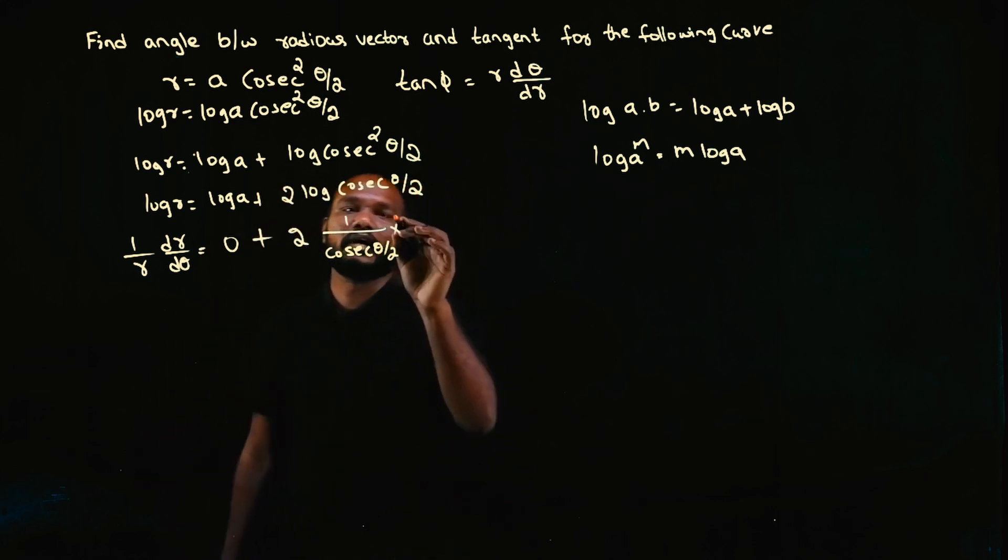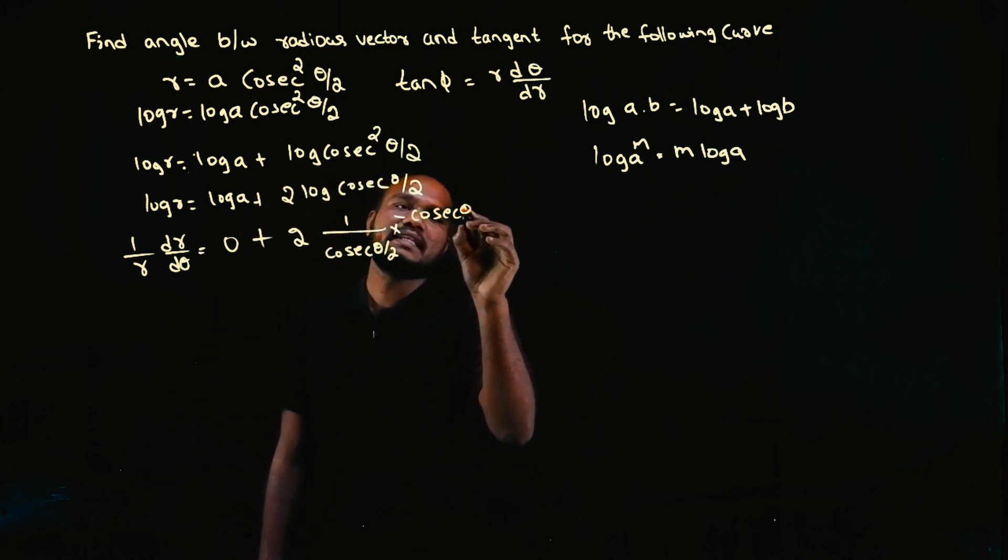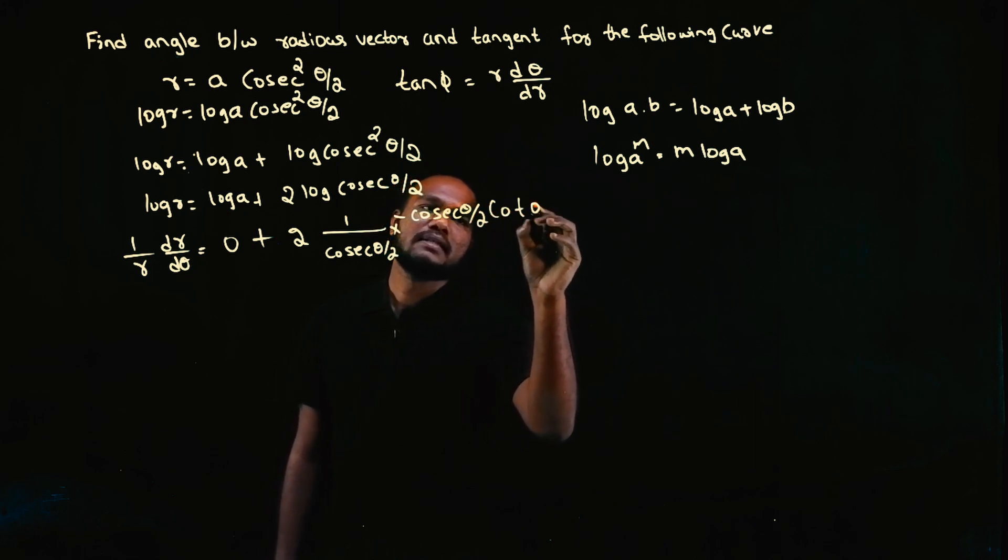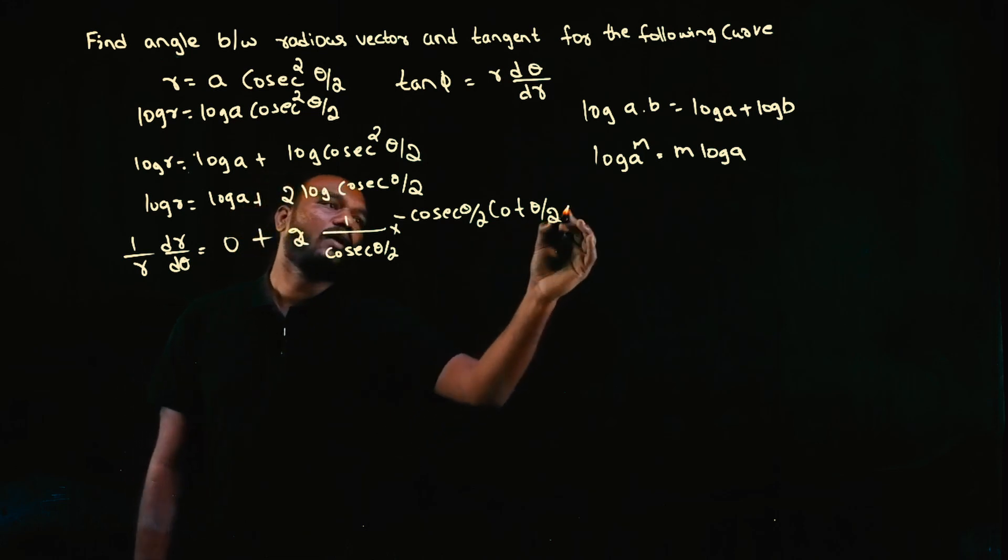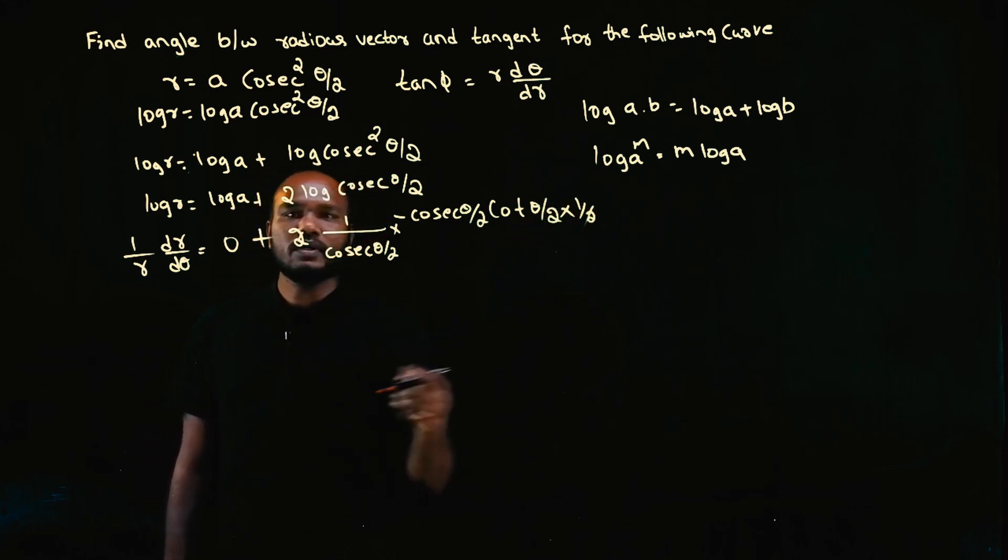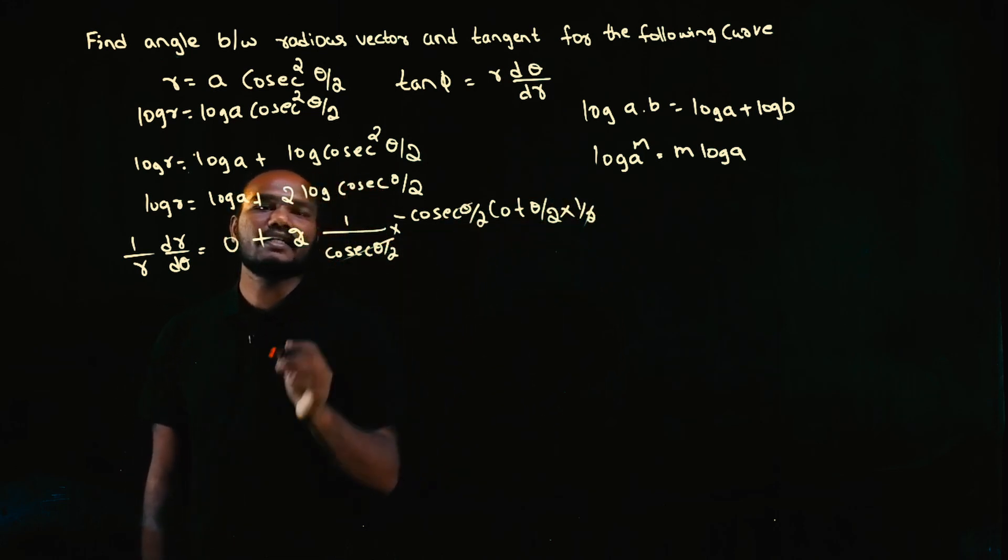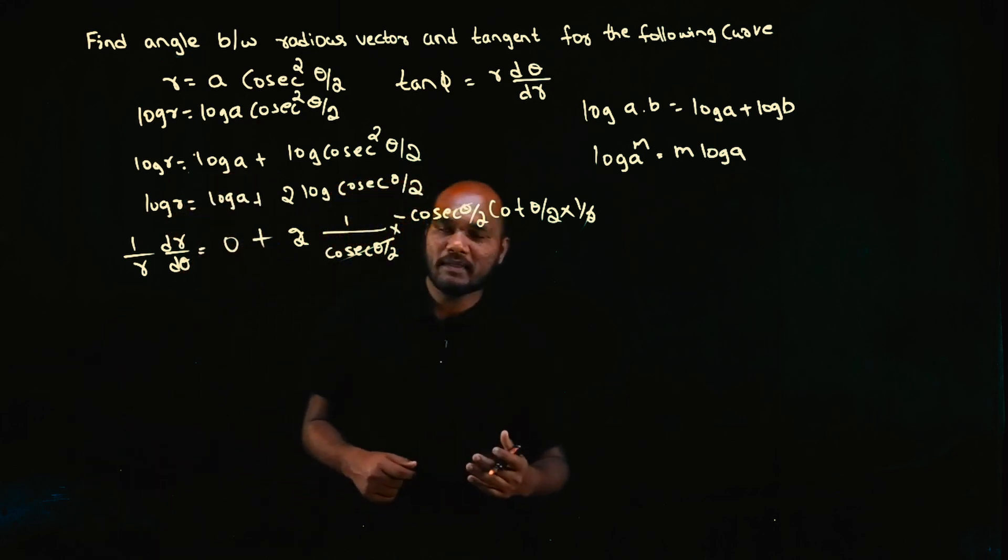Keep 2 as it is. Log differentiation is 1/cosec(θ/2). Cosecant differentiation is -cosec(θ/2)·cot(θ/2), times (1/2). So 2 and 2 get cancelled. Cosec(θ/2) terms cancel. What am I left with? (1/r)·(dr/dθ) equals -cot(θ/2).